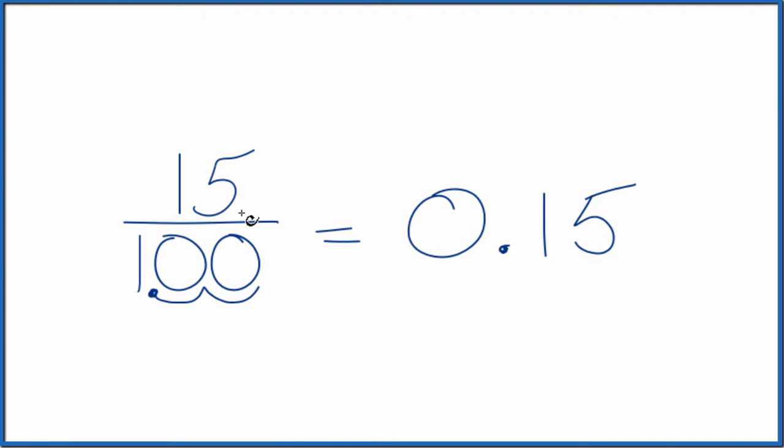But we also have to move the decimal point two places in the numerator here. And that gives us 0.15 over 1, which is just 0.15.